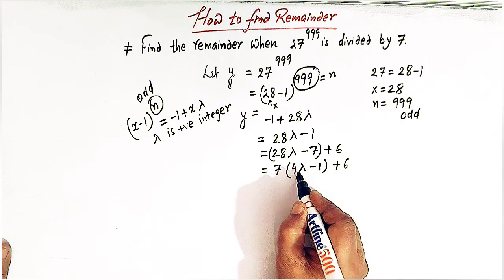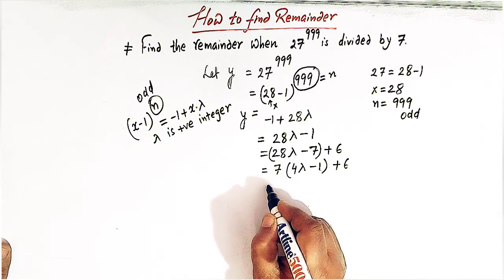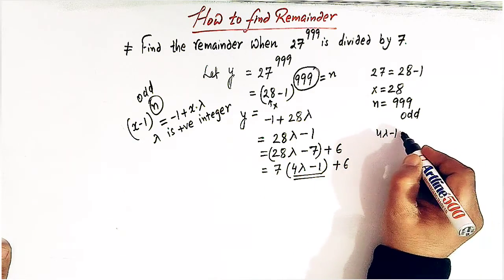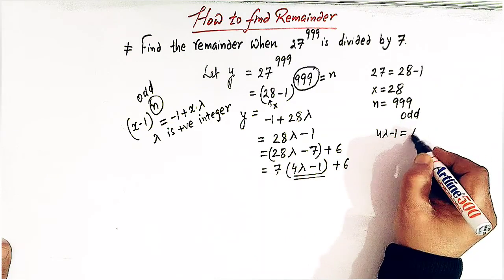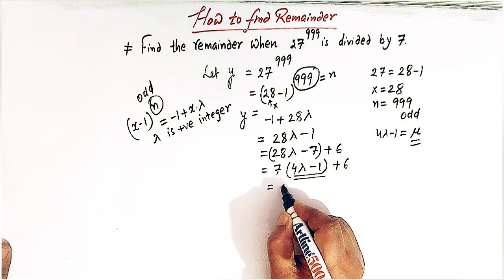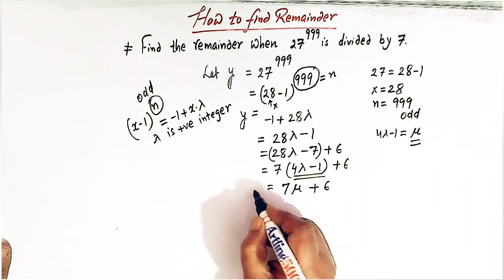7 times 4 lambda is 28 lambda. 7 times minus 1 is minus 7, and now 4 lambda minus 1 can be replaced by some other number that is mu. So we can now write 7 mu plus 6.